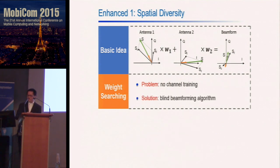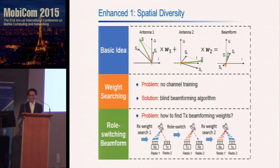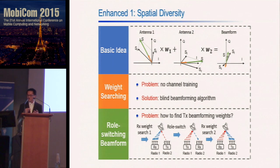We address this problem through a blind beamforming algorithm that finds the optimal receiving weights. Another problem is how to find the transmit beamforming weights efficiently, since the naïve approach of searching all possible weights would take infinite time. We solve this through a role-switching beamforming method: first find the receiving weights via blind beamforming, then switch the roles of TX and RX to convert the receive beamforming weights to TX beamforming weights, and then run another blind beamforming algorithm on the new receiver.